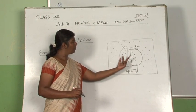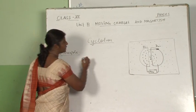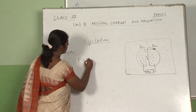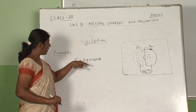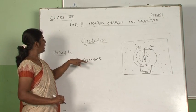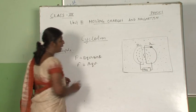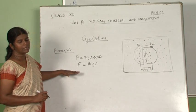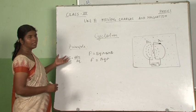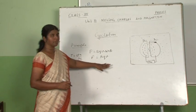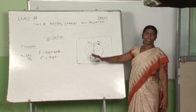The cyclotron consists of two D-shaped electrodes, D1 and D2. If a charged particle is kept inside the magnetic field, F equals BQV sin theta. When velocity and magnetic field are perpendicular to each other, F equals BQV. We derived the formula T equals 2πM by BQ, meaning the frequency does not depend upon the speed of the charged particle.